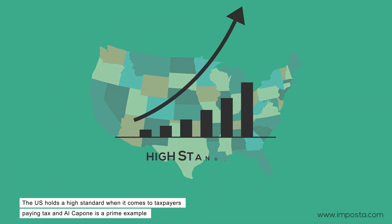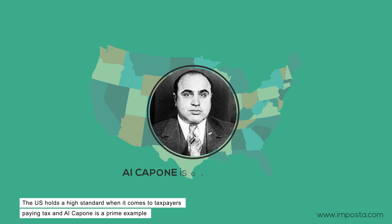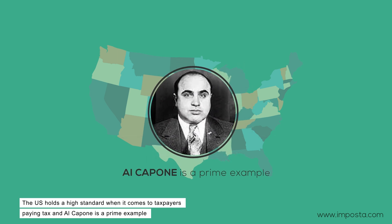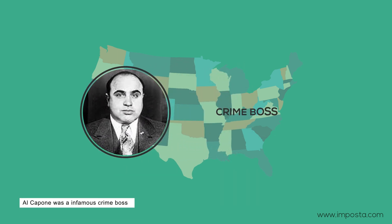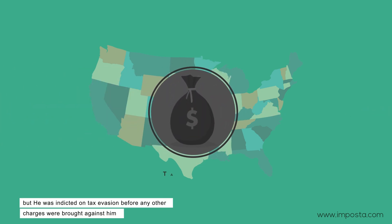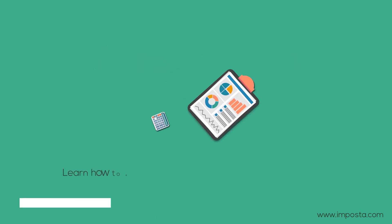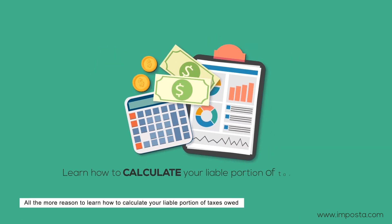The U.S. holds a high standard when it comes to taxpayers paying tax, and Al Capone is a prime example. Al Capone was an infamous crime boss, but he was indicted on tax evasion before any other charges were brought against him. All the more reason to learn how to calculate your liable portion of taxes owed.